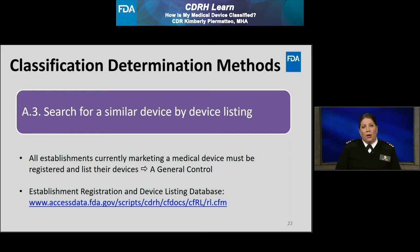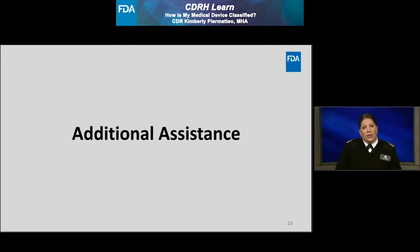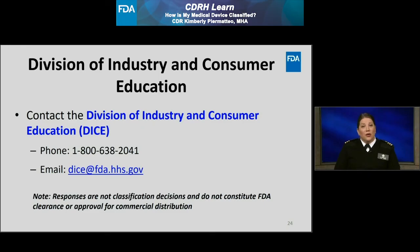If you are unable to determine the appropriate product classification for your proposed device, you may consider requesting additional assistance from the FDA. For informal assistance, you may contact the Division of Industry and Consumer Education, or DICE. Our staff can provide further guidance on conducting any of the three search methods discussed in this module. DICE staff may be reached at the phone number or email provided on this slide. Please note, responses to such informal assistance are not classification decisions and do not constitute FDA clearance or approval for commercial distribution.